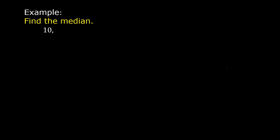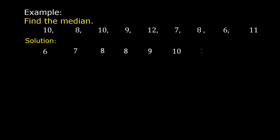Example: find the median of 10, 8, 10, 9, 12, 7, 8, 6, and 11. Solution: arrange them in ascending order — 6, 7, 8, 8, 9, 10, 10, 11, 12. Count all the values: 1, 2, 3, 4, 5, 6, 7, 8, 9. There are 9 values, which is an odd number.